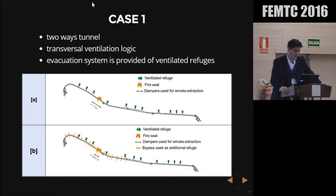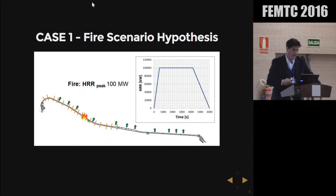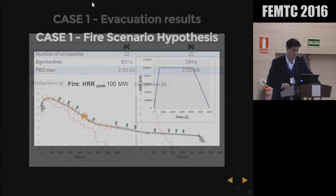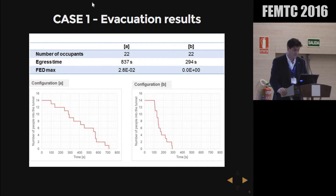We proposed to the client to approach the problem by evaluating the interaction of people with the combustion products and performing an analysis that takes into consideration performance metrics to monitor the FED and the egress time. Performing the analysis on the basis of the same fire scenario hypothesis, we demonstrated that the egress time and the FED in configuration B are less than in configuration A, demonstrating that the system has a higher level of safety than the original one.